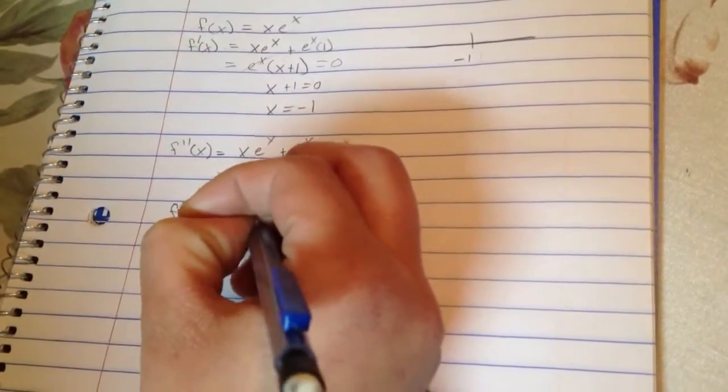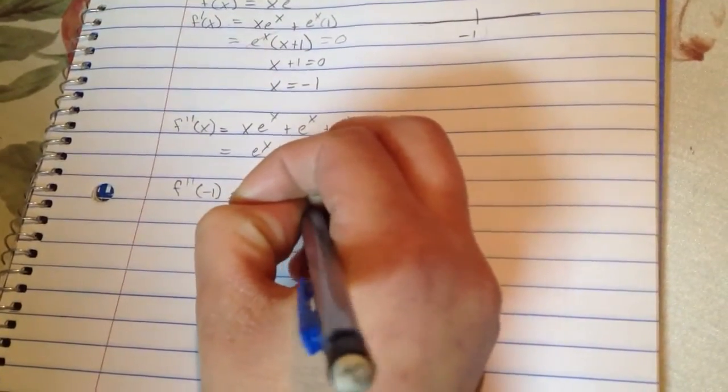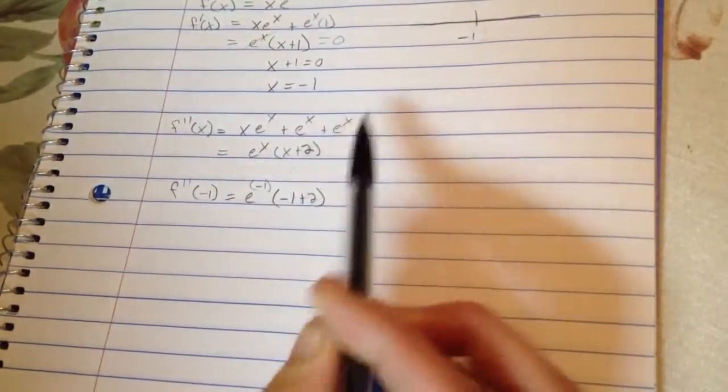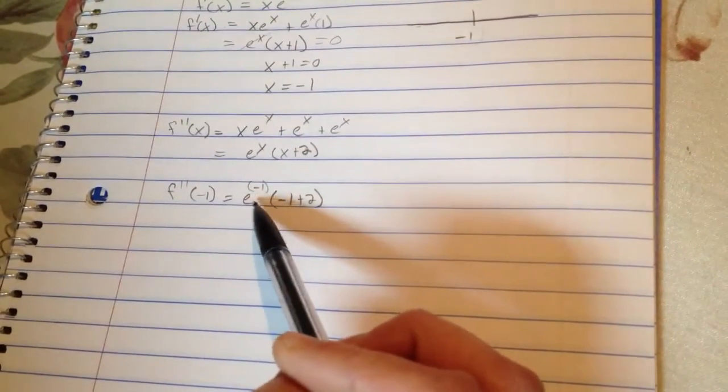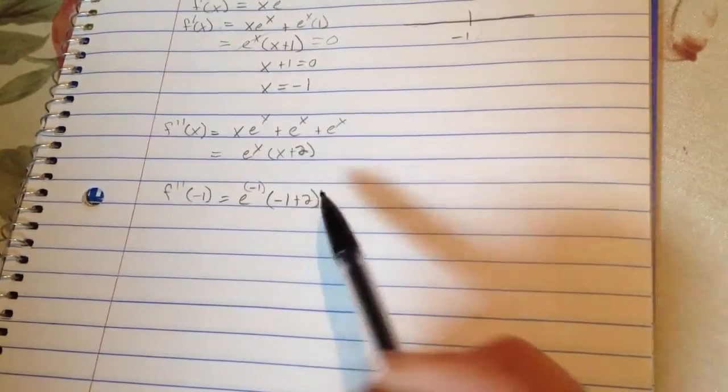So, e to the negative 1 times negative 1 plus 2. So, this is always going to be positive. Then you've got negative 1, 2.